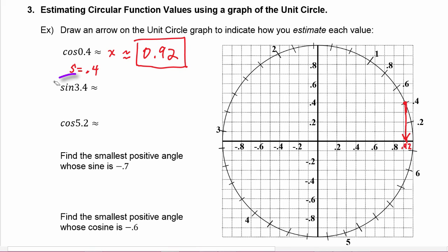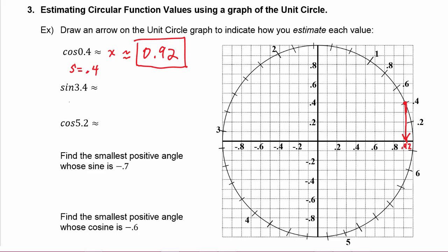In this next problem we're asked to find the sine of 3.4. Make sure you're keeping track of what variables you have — this means that s is equal to 3.4, and it's asking us to find the sine, so we're going to have to look at the y-value. We travel around the arc length of the circle until we get to 3.4.